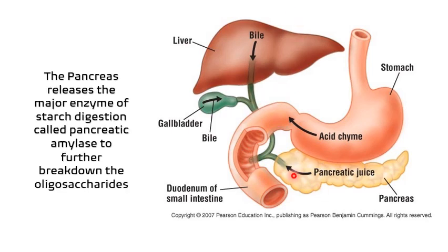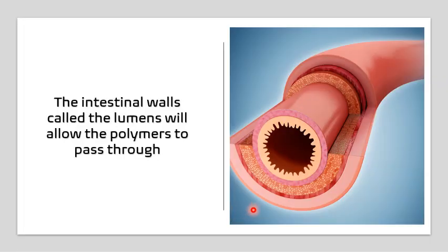The pancreas will now release the major enzyme of starch digestion. These enzymes are called pancreatic amylase. They will further break down those remaining oligosaccharides. Our intestinal walls have a channel called the lumen, which allows polymers or food to pass through.